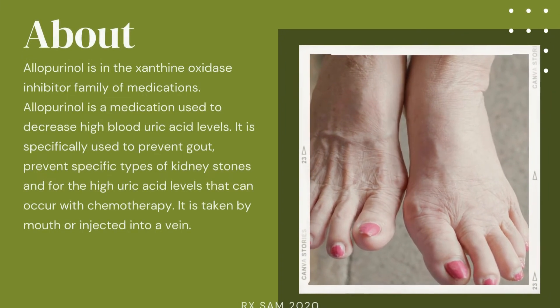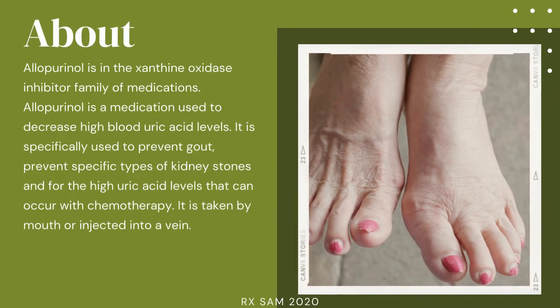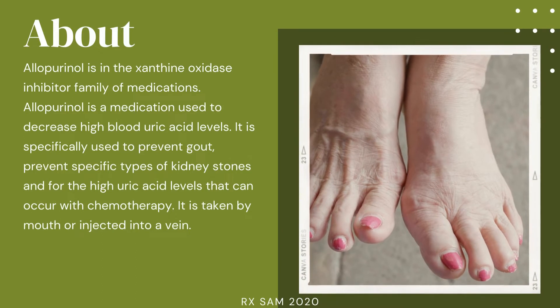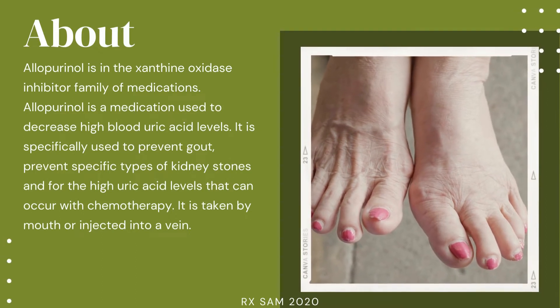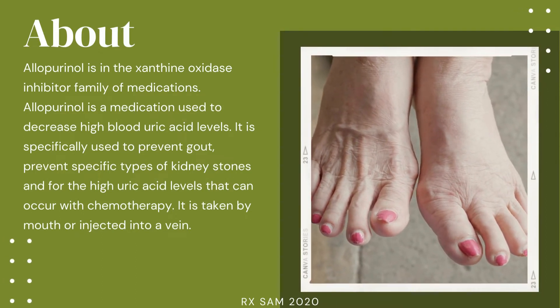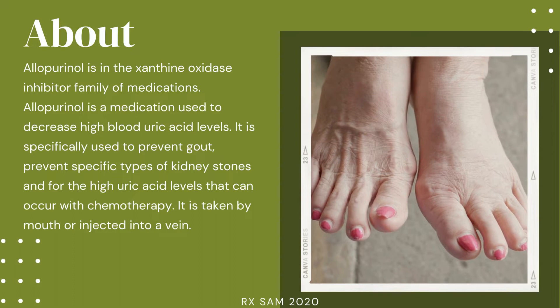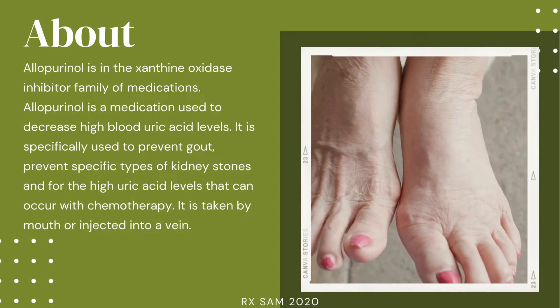Allopurinol is in the xanthine oxidase inhibitor family of medications. It is a medication used to decrease high blood uric acid levels.